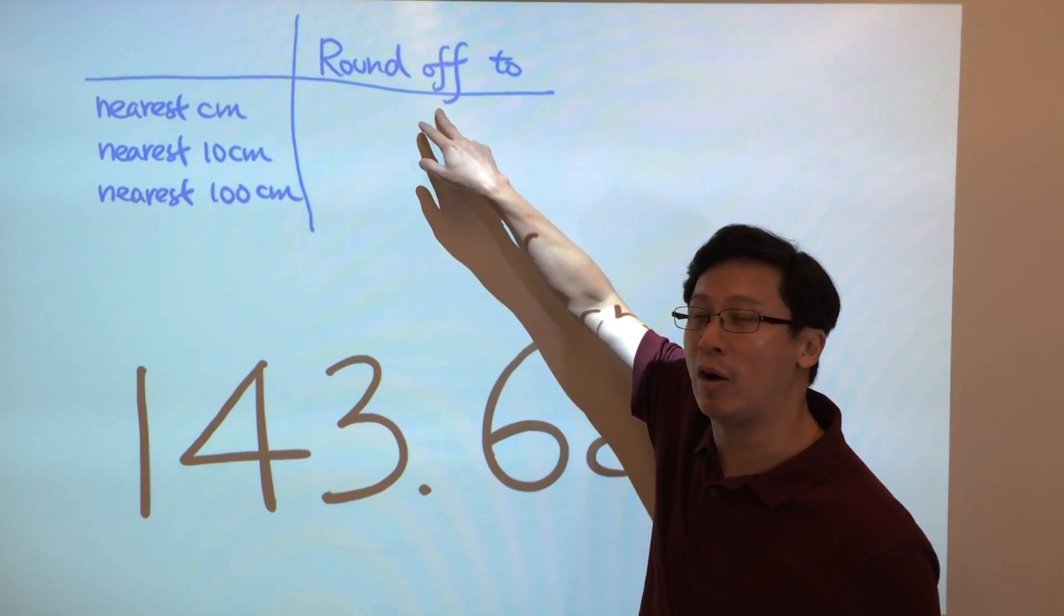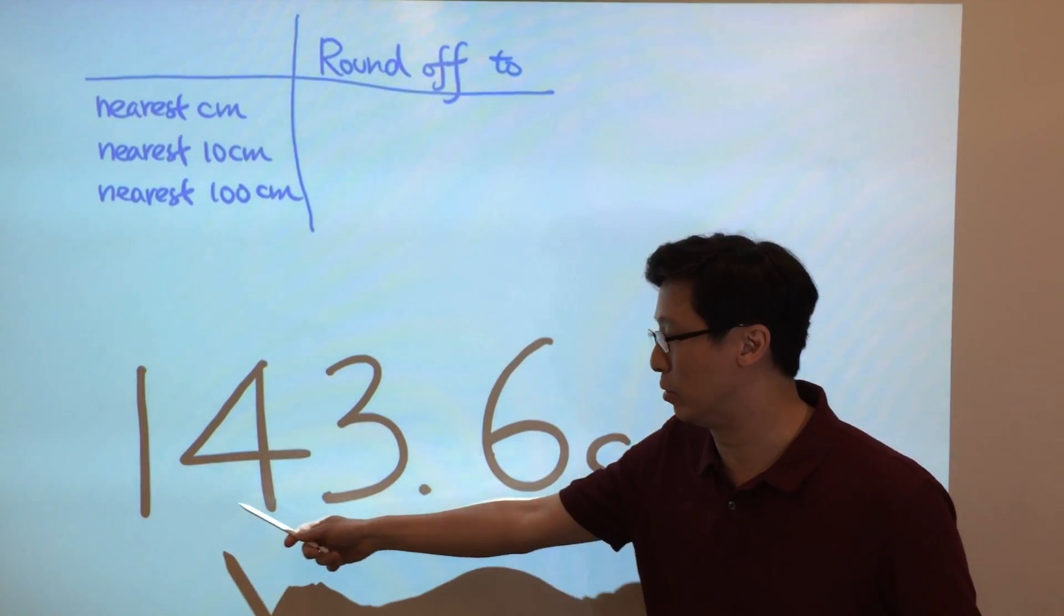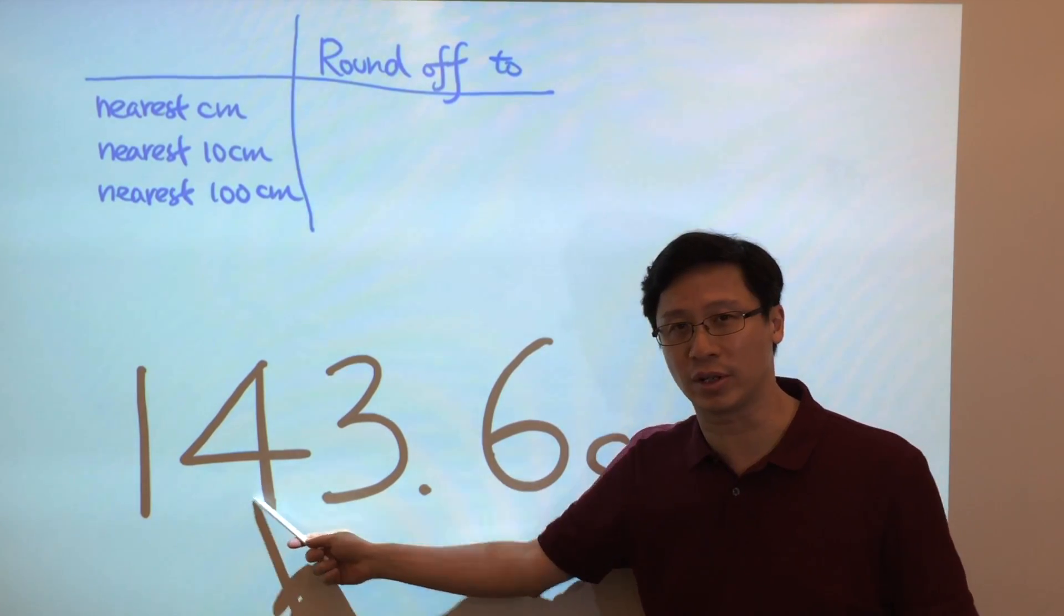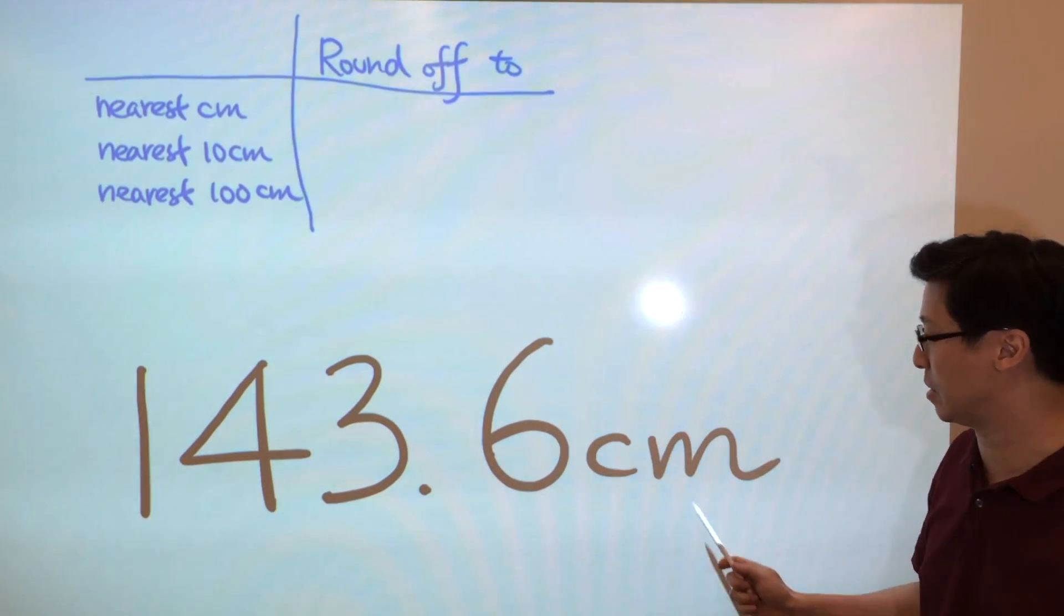Let's look at the meaning of round off first. For example, the height of a student is 143.6 cm.